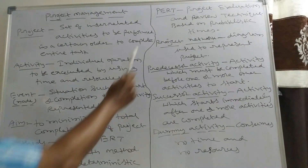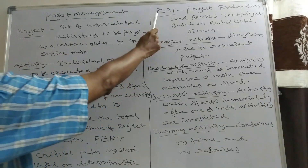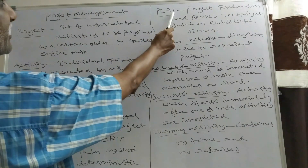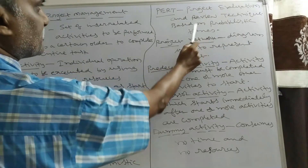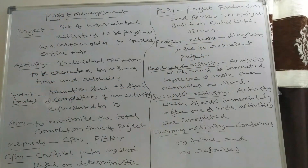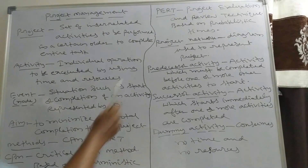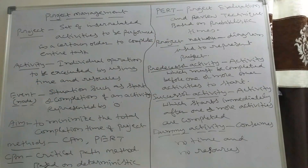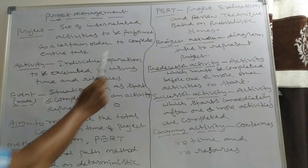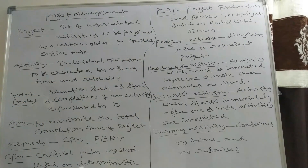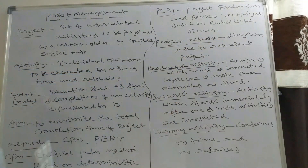PERT is Project Evaluation and Review Technique. It is based on probabilistic times — meaning judgment or guessing. PERT is used in research projects and similar projects. The main difference between CPM and PERT is that CPM is based on deterministic times, while PERT is based on probabilistic times.